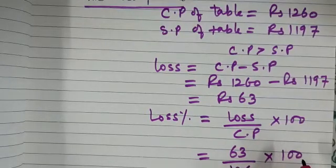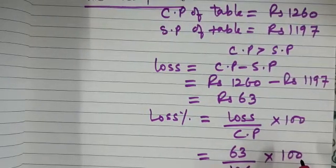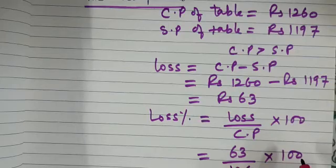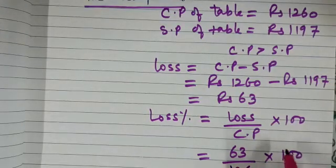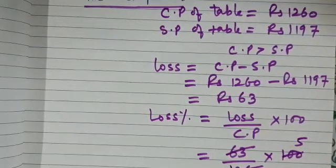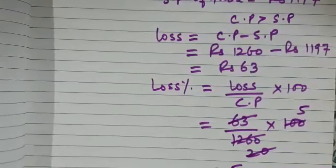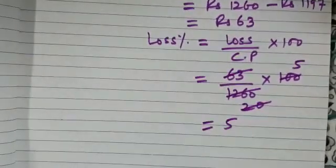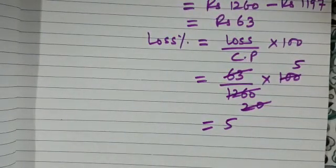And we are going to now do this calculation: 63 upon 1260 into 100. Simplify this, so we see that loss percent comes out to be 5. So in this entire transaction loss percentage is 5.